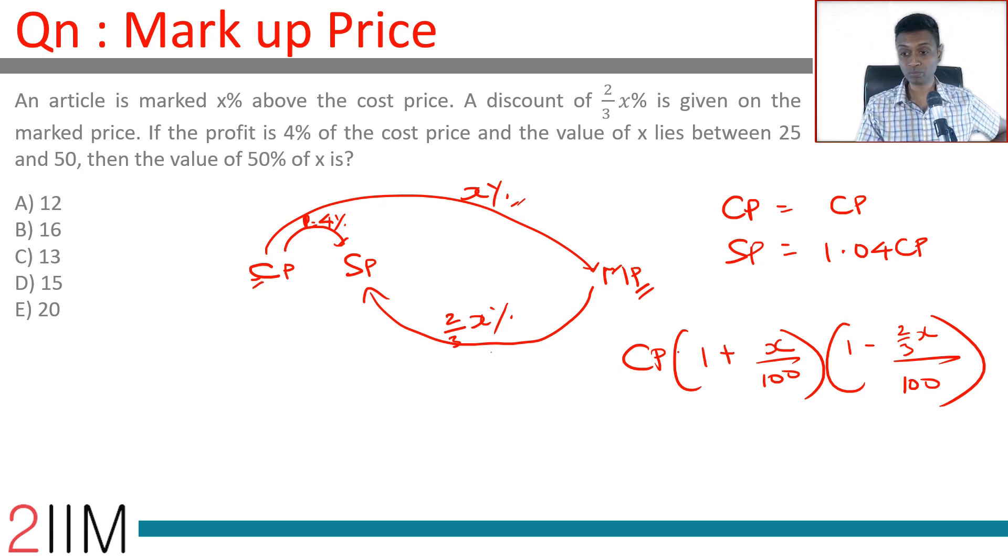Cost price times 1 plus x by 100 takes us to mark price. Mark price times 1 minus two-thirds of x by 100 takes us to selling price, which is nothing but 1.04 times cost price.